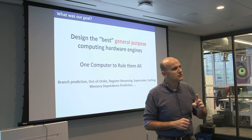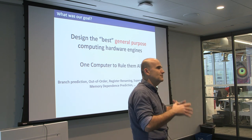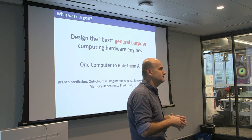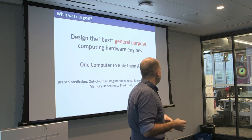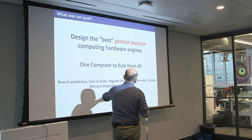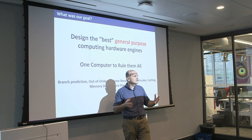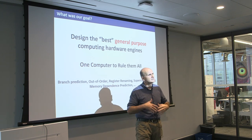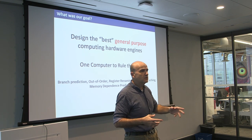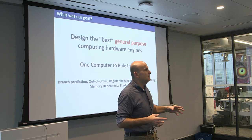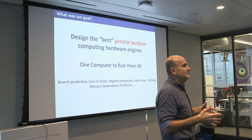The important thing to realize is that most innovations work because they understand that programs are not random — they have particularities. For example, caches are fast memories on the chip that work because programs have something called locality — they tend to access the same data close in time. You can write a program that doesn't have locality to prove caches are useless, but no real program does that intentionally.